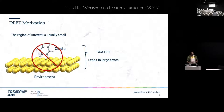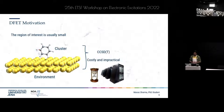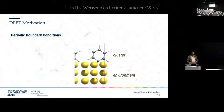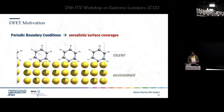If you decide to treat the entire system using LDA or GGA DFT, you might sometimes get large errors in local properties like adsorption energies or excitation energies. On the other hand, treating the entire system using CCSD(T) is not computationally feasible and usually not needed. Furthermore, you also get unrealistic surface coverages when employing periodic boundary conditions, and one usually has to resort to a very large supercell to address this issue.